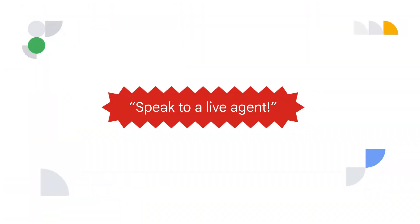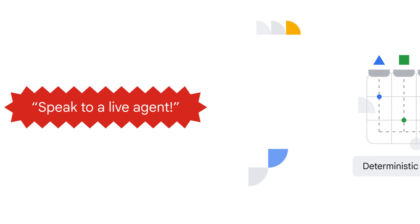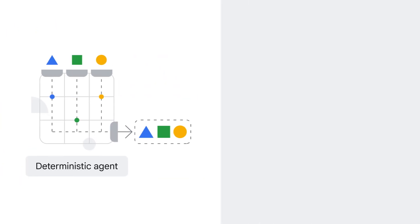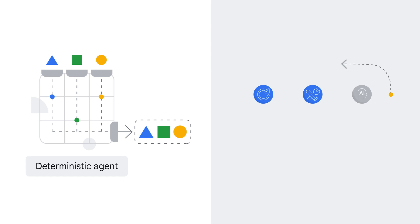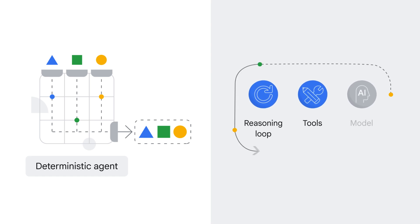And usually when I start yelling at the phone — speak to a live agent. Exactly. Thinking back to our breakdown of the agent components from a previous course, these deterministic agents only contained one or two components of the agent: the reasoning loop and the tools.